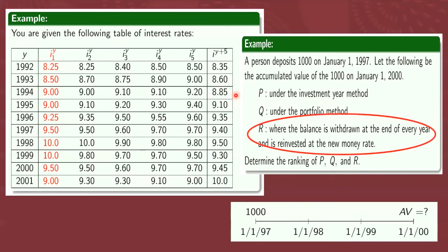Now, let's consider this method. The balance is withdrawn at the end of every year and is reinvested at the new money rate. So, let's take a look at this time diagram again. So, sa first year, ikaw ay new investor. Ibig sabihin, new money rate or starting rate ang ibibigay sa iyong interest rate. So, that's why 9.5% ang gagamitin natin because this is the new money rate during this calendar year. Ngayon, after one year, iwi-withdraw mo yun. Tapos, idideposit mo ulit. So, ibig sabihin, you are again a new investor during the year 1998.